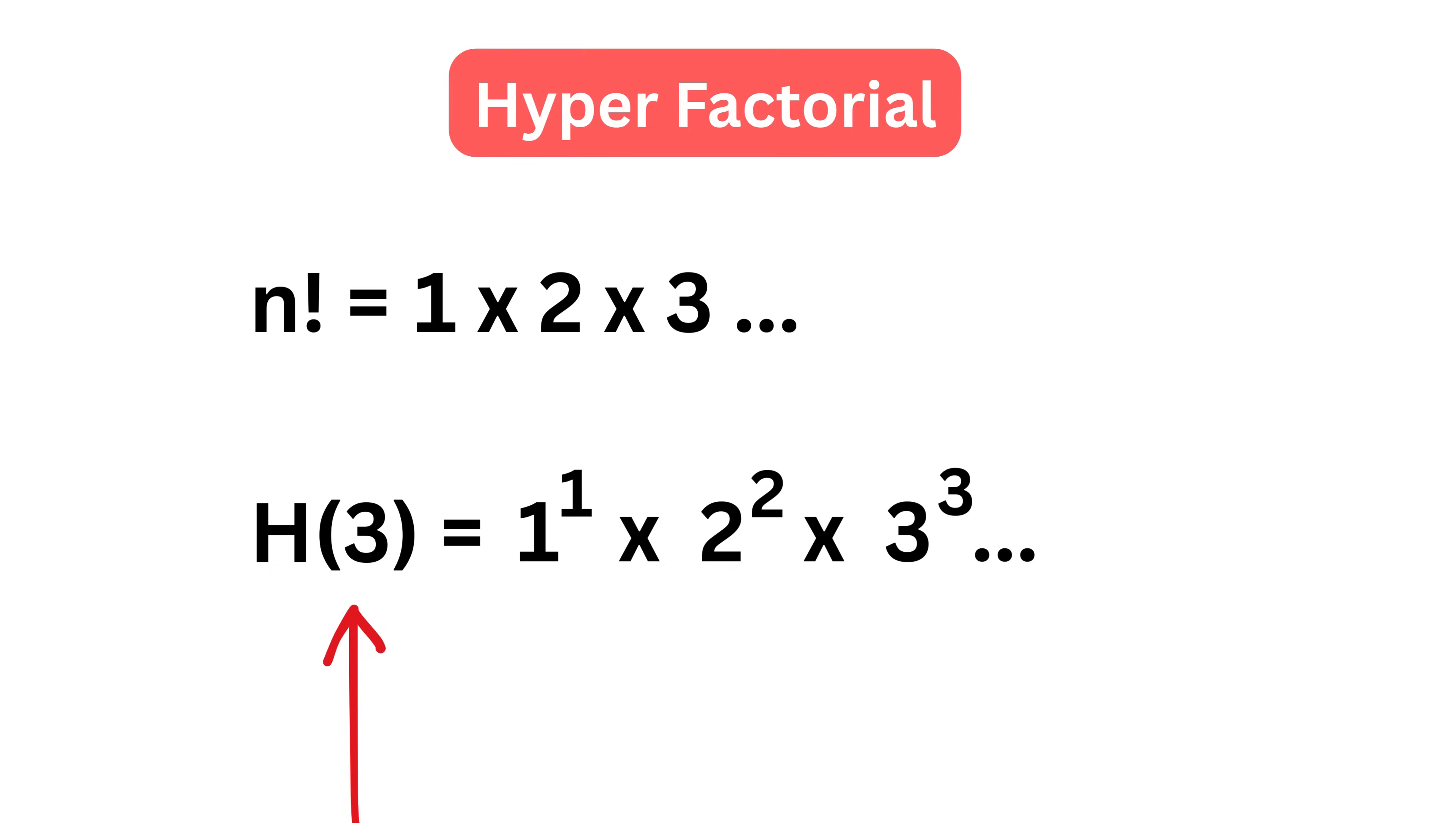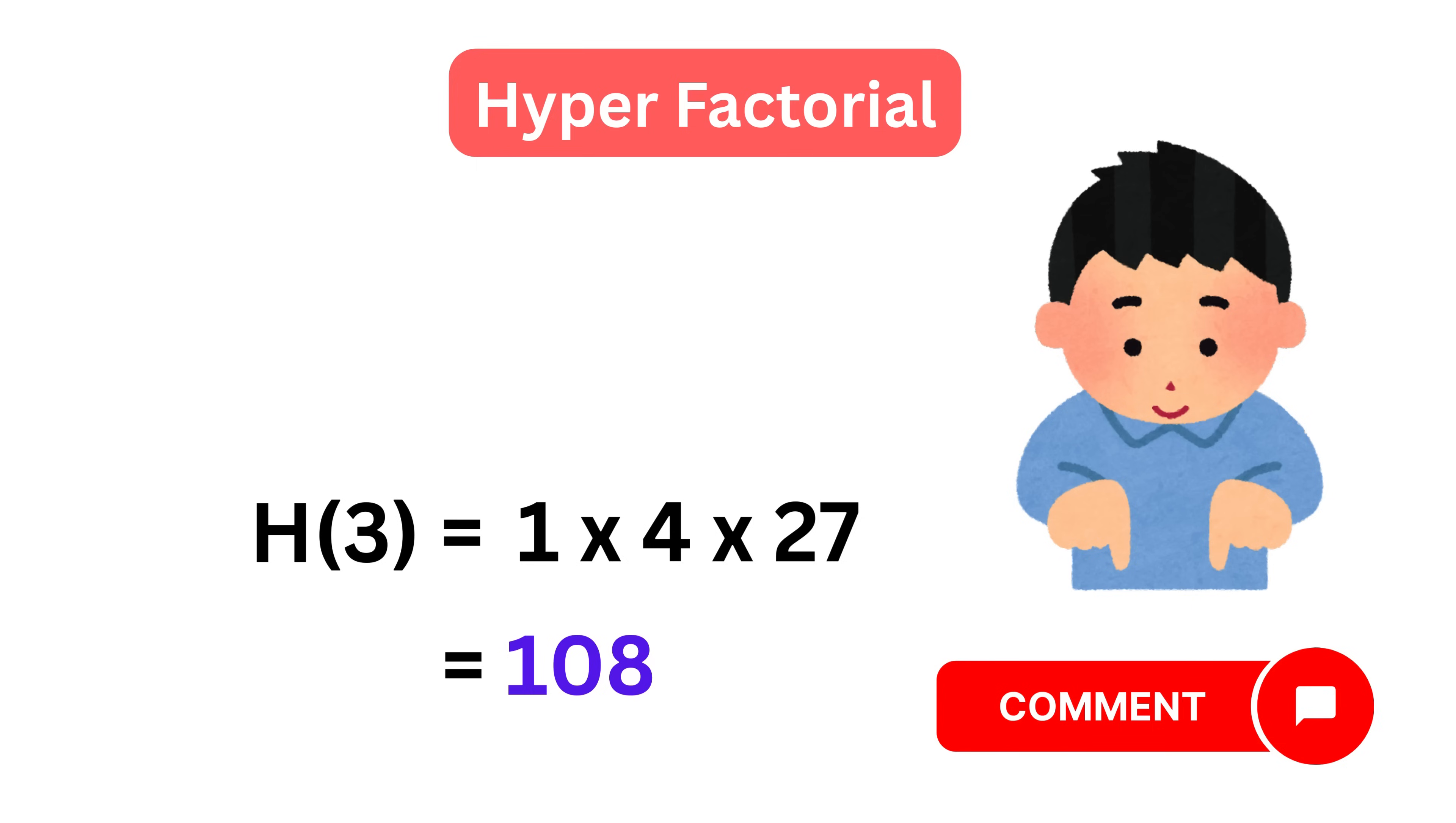So for example, a hyperfactorial of 3 would be 1 to the power 1 times 2 to the power 2 times 3 to the power 3. That is 1 times 4 times 27, which equals 108. Let me know in the comments what will be the hyperfactorial of 4.